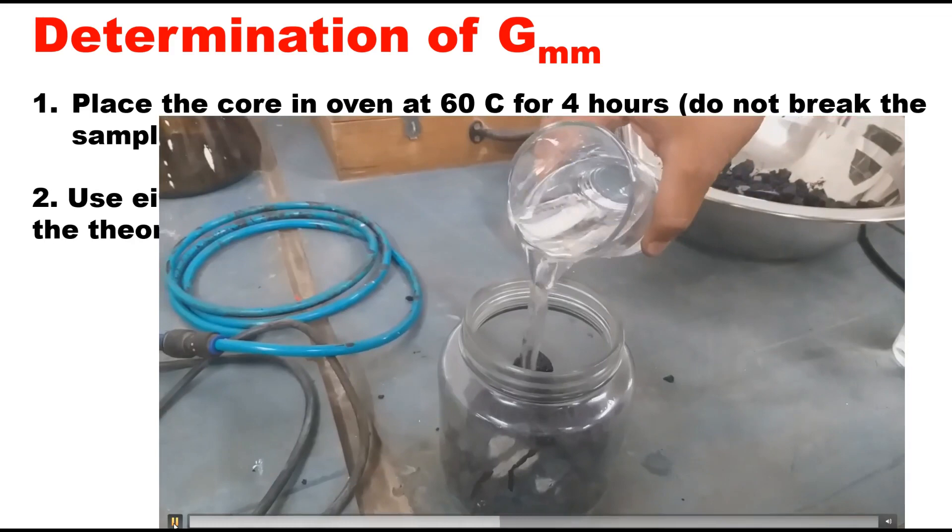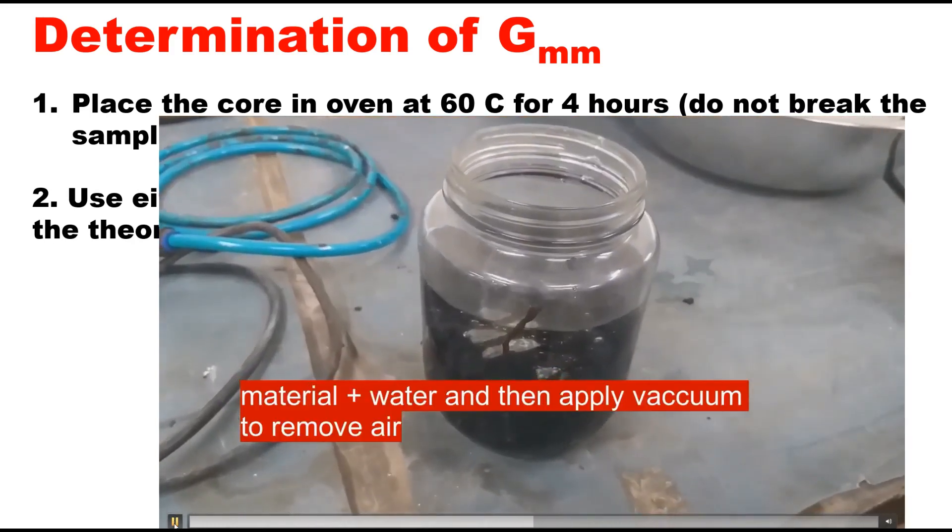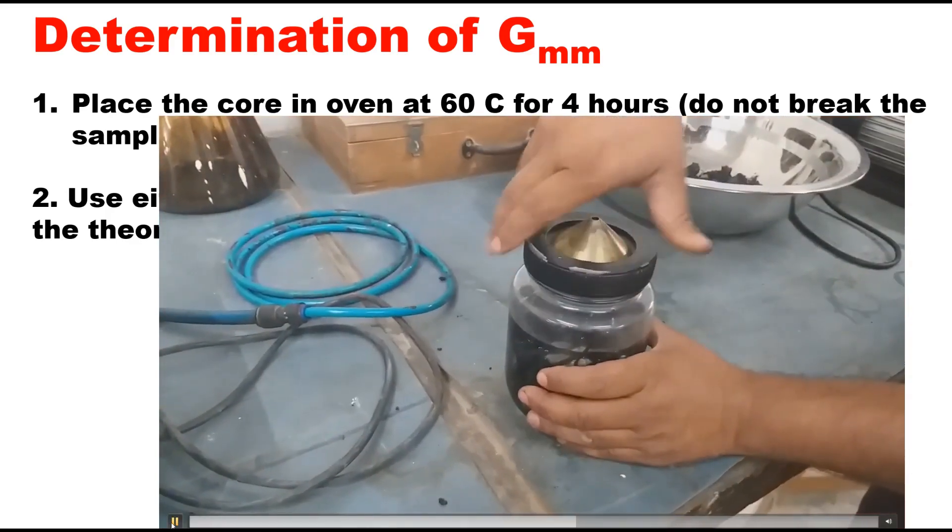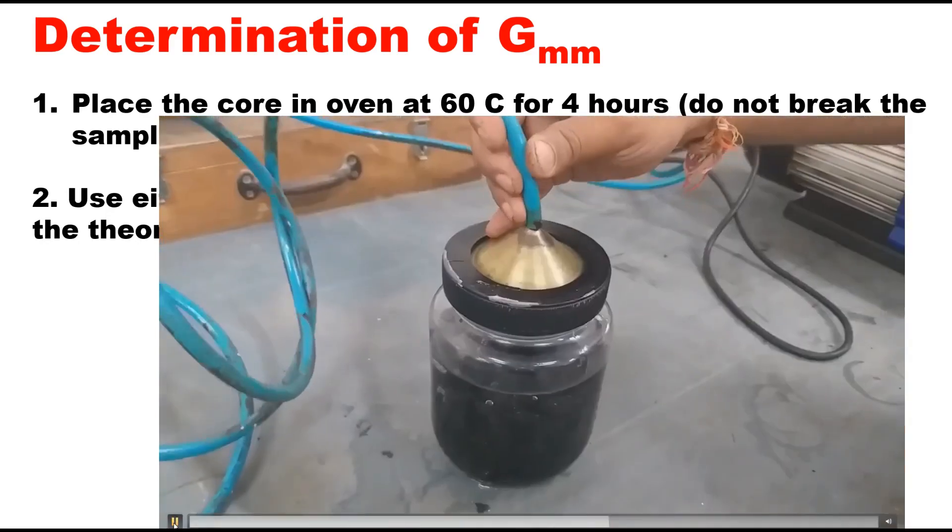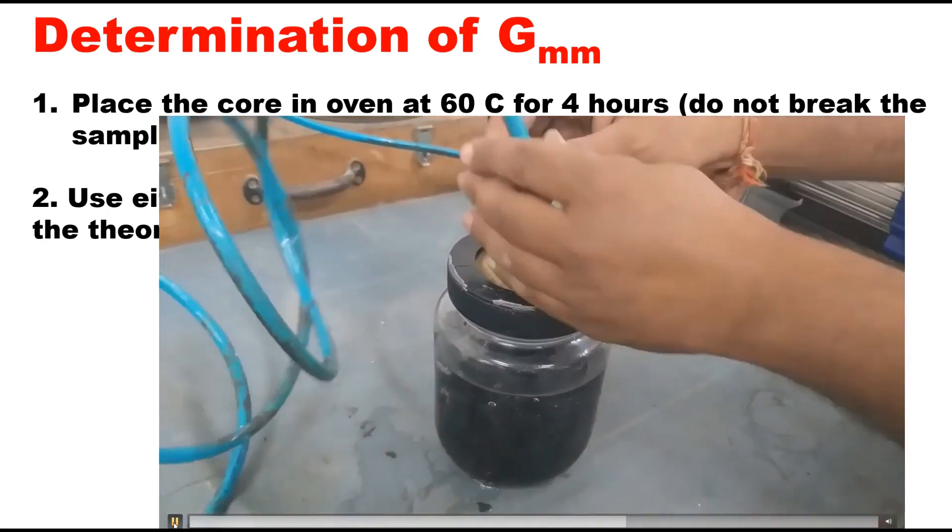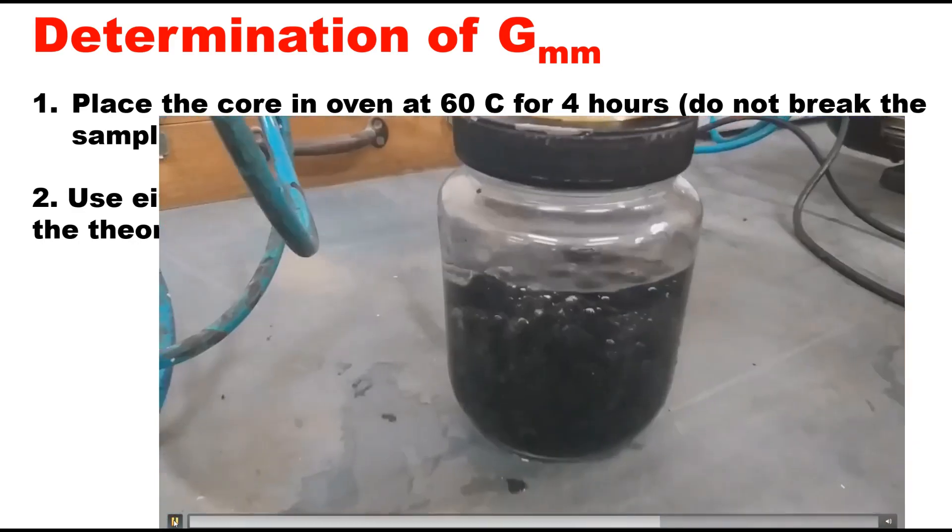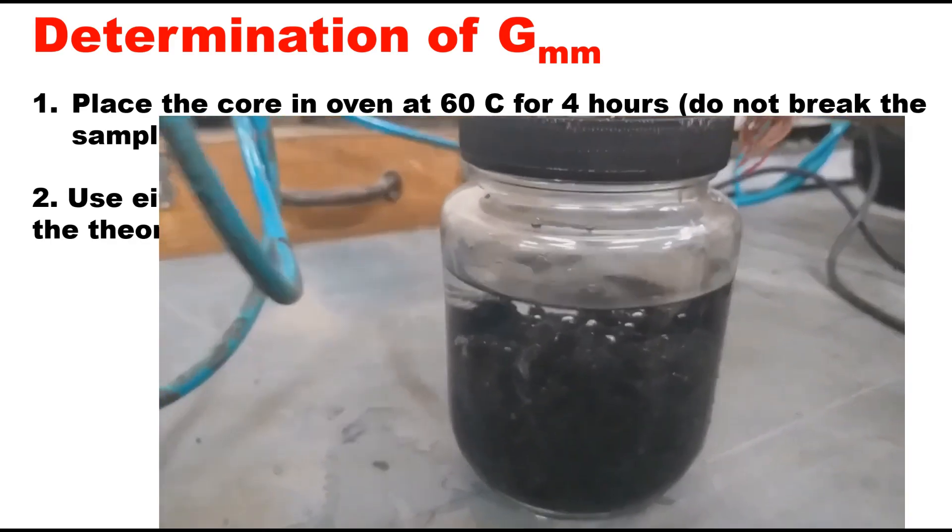Then you place some water into this pycnometer and apply vacuum. Vacuum of about 3.7 kPa or you can say 28 millimeters of Hg will be sufficient, and this vacuum should be applied for 15 minutes to remove pore and trapped air from the mixture.